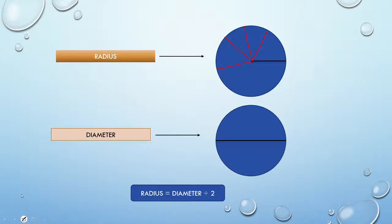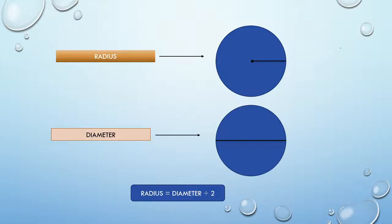There is only one center in a circle. Coming to diameter: what do we mean by diameter? A line segment joining two points of the circle and passing through the center is called diameter. There are two conditions.